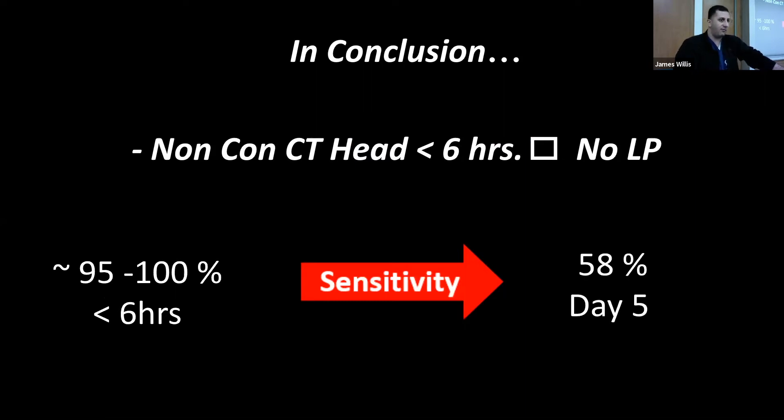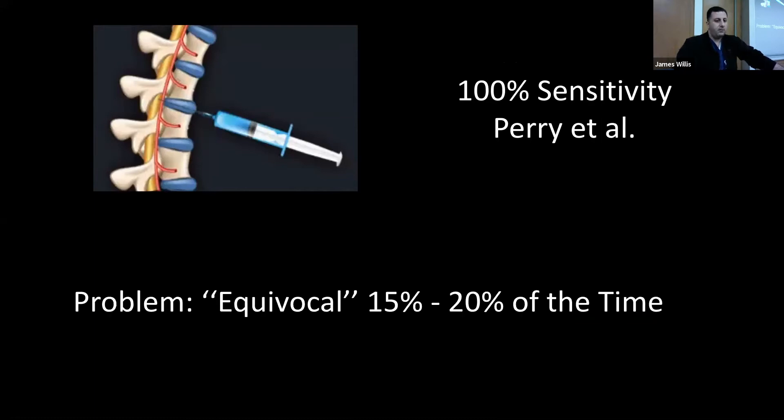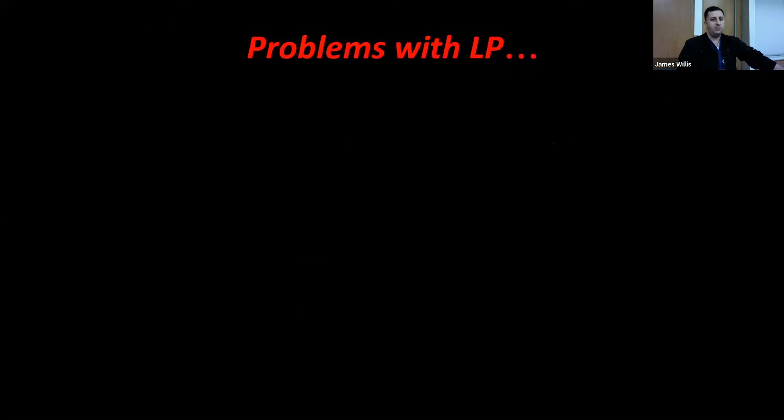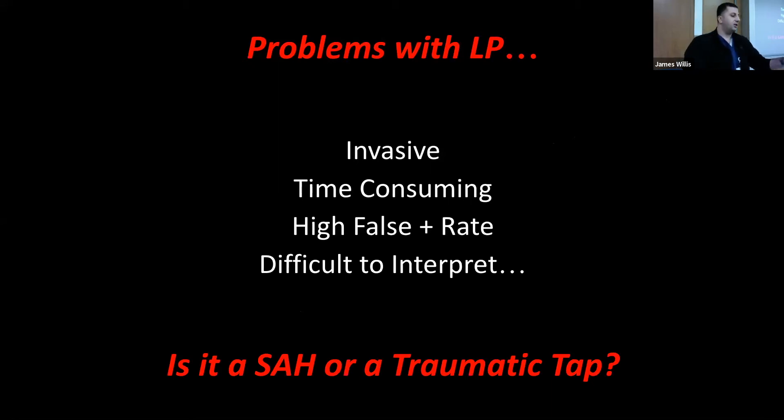However, it drops dramatically afterwards because theoretically, you have to imagine the blood is going into the spinal canal. It's moving away from the head. It's no longer in the area where it can be detected. So what about LP? The PERI study demonstrated that it does have a great sensitivity, but the problem with LP is a lot of the times it's equivocal. We really can't tell whether it's a subarachnoid hemorrhage. Is it a traumatic tap? Many things can happen. It is also invasive. It's time consuming. It does have a high false positive rate, especially with the traumatic taps, and it can be difficult to interpret.